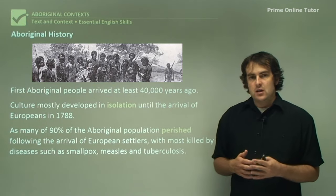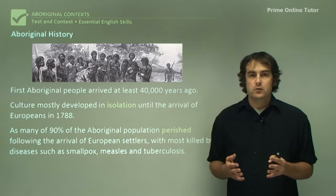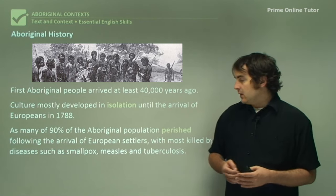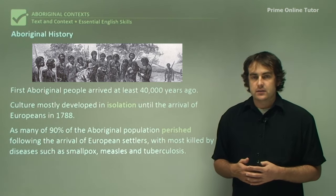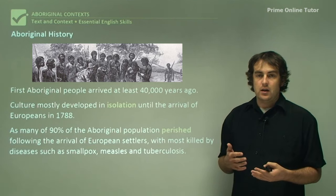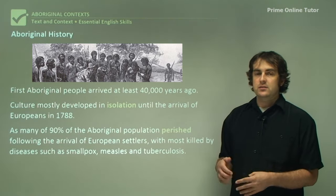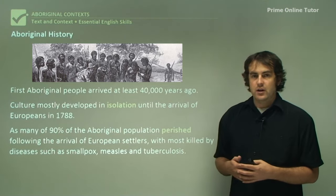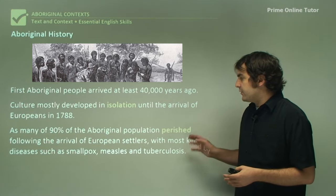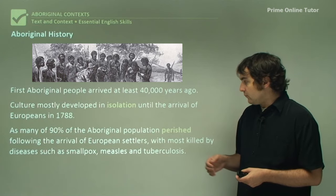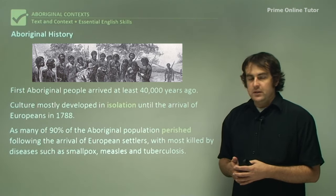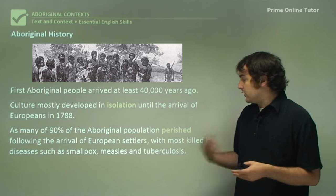As many as 90% of these people unfortunately perished upon the arrival of Europeans, mostly from massive outbreaks of diseases like smallpox, measles and tuberculosis. Many of the Europeans who arrived had immunities built up to some of these diseases. It still killed Europeans, but it didn't kill Europeans in such great numbers as it did for Indigenous Australians. And so the population of Aboriginal people in Australia plummeted following European arrival.